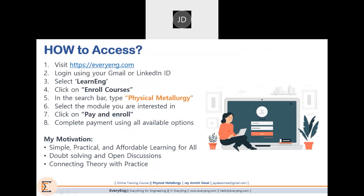To access, you can visit the link shown here and log in using your Gmail or LinkedIn ID. You can select LearnEng and then click on Enroll Courses. In the search bar, you can type 'physical metallurgy', select a module you are interested in, and pay to enroll. Complete payment is done using all available options.